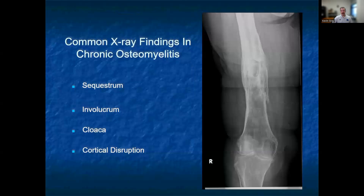In chronic osteomyelitis, we can see sequestrum, involucrum, cloaca, and cortical disruption.